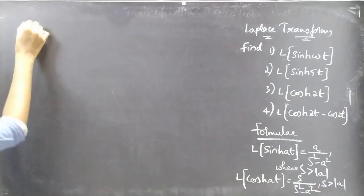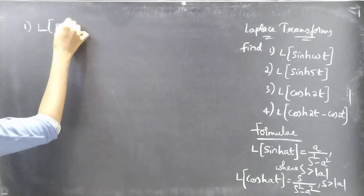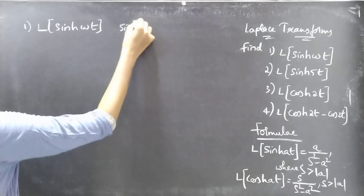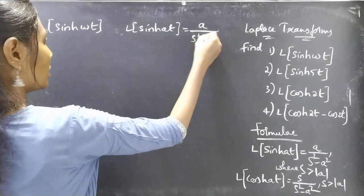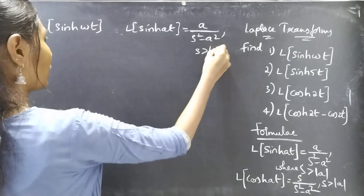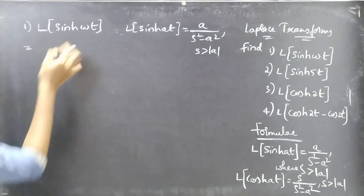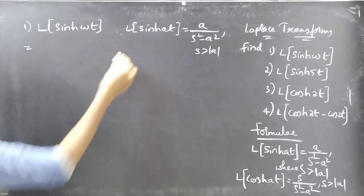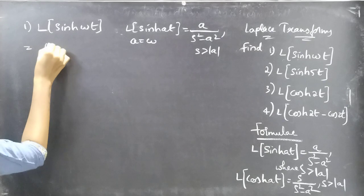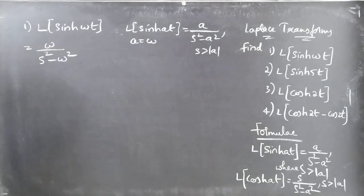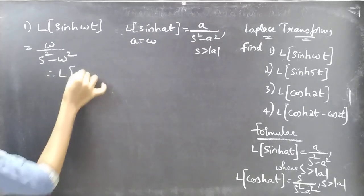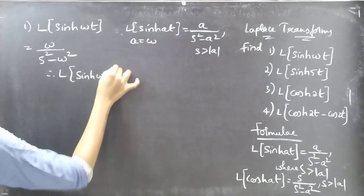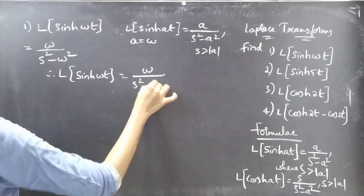Now coming to the problems — first one: find L of sinh(ωt). We know that L of sinh(AT) is A by S squared minus A squared, for S greater than mod A. Just compare sinh(ωt) with sinh(AT); then for A equal to ω, just replace A by ω in the formula. Therefore, L of sinh(ωt) equals ω by S squared minus ω squared.